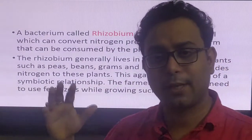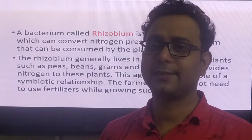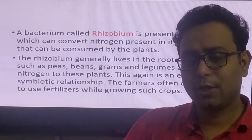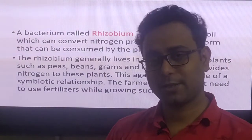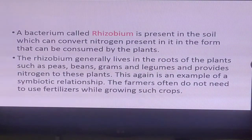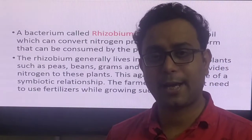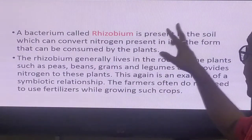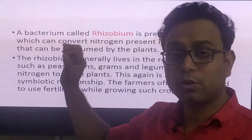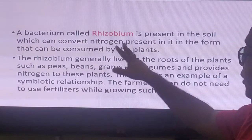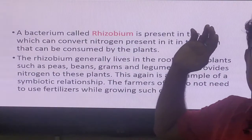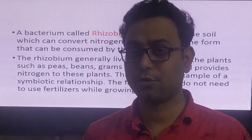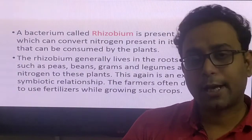In biological science, bacteria are most important for increasing soil fertility. You already know the name of this bacteria — that is Rhizobium bacteria. Rhizobium bacteria are present in the roots of leguminous plants. The importance of Rhizobium bacteria is that it is present in the soil and also in the roots of leguminous plants, and it converts nitrogen into a form available for the plant.